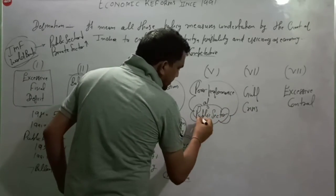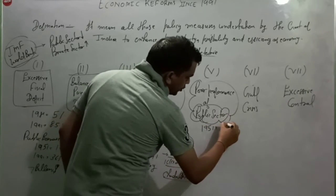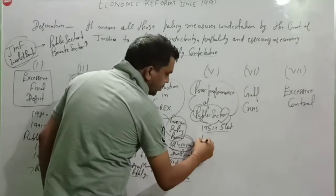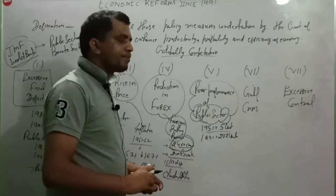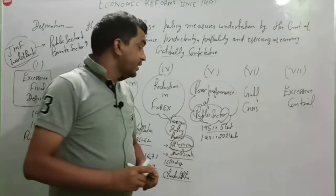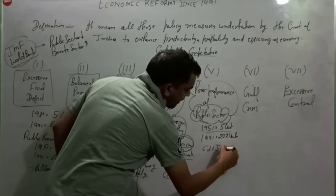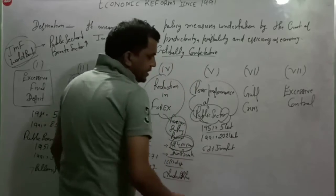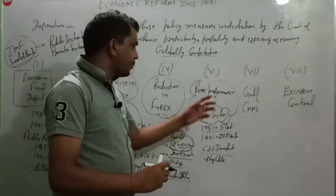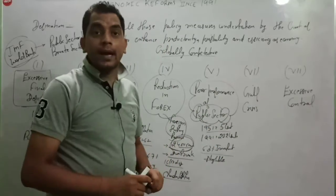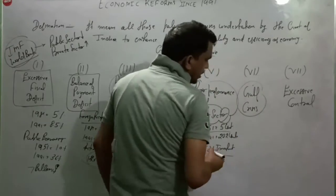The public sector was growing but performing poorly. In 1951, there were only 5 public sector enterprises, and by 1991, the number had grown to 232 units. The public sector consumed 63% of total GDP investment, yet the returns were very low. This poor performance of the public sector became a key reason why economic reforms were needed in 1991.